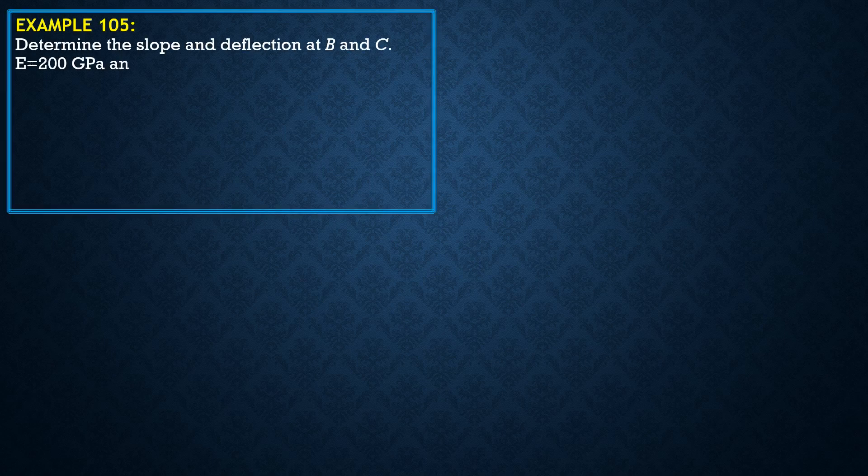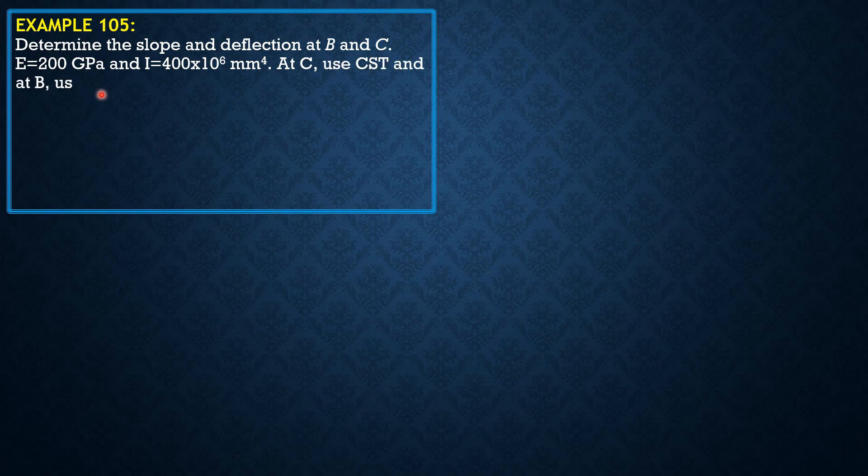Determine the slope and deflection at B and C. E is 200 gigapascals and I is 400 times 10 to the 6 mm to the 4th. At point C use Castigliano's second theorem and at B use virtual work method.